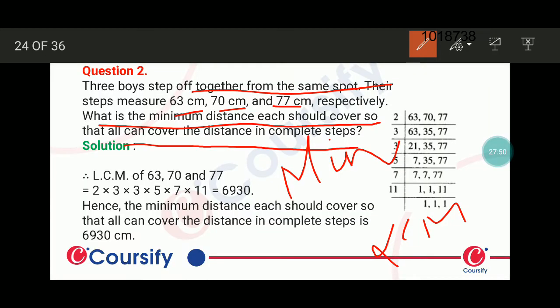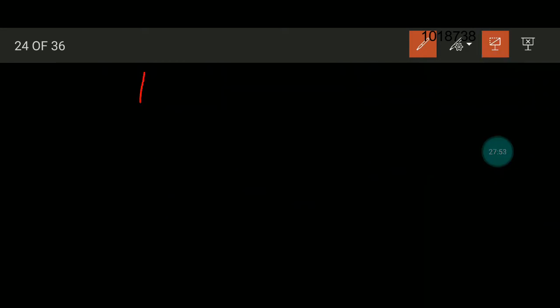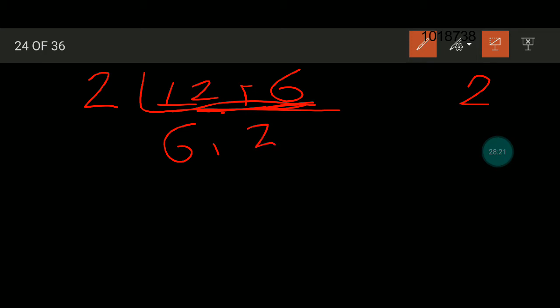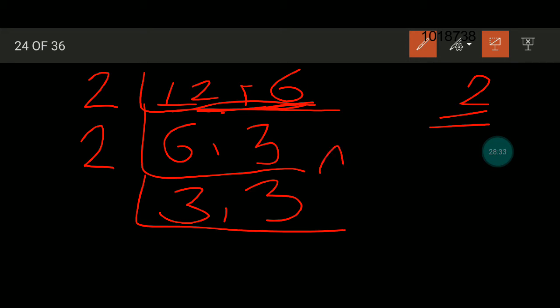Another method which we can apply is the division method. First of all, we need to see a number that either divides the first number or the other. We start from 2. So 2 divides both. Here we have prime factorization simultaneously. So 2 will divide 12 to get 6, and 6 to get 3. Now again, we have one number that can be divided by 2. So 2 divides 6 to get 3, and 3 is copied as is.